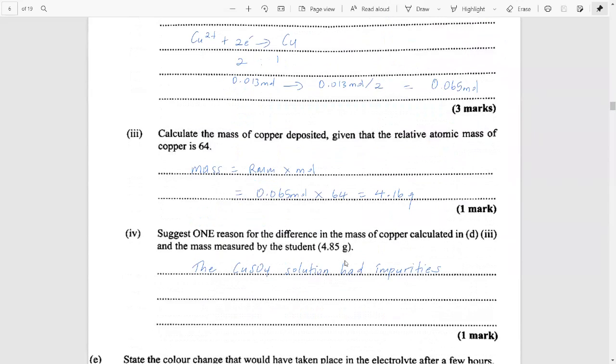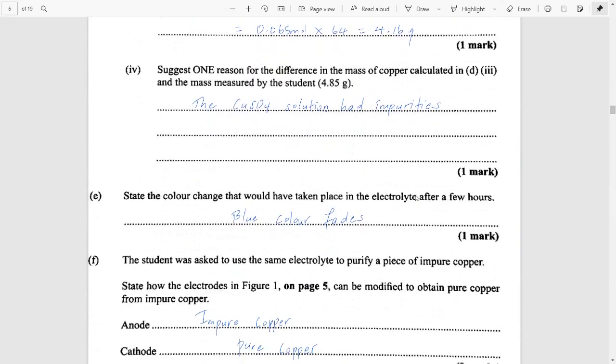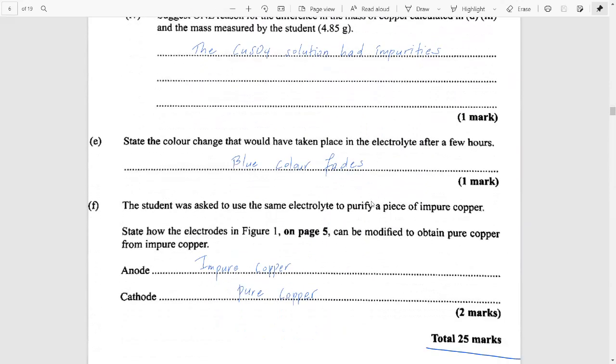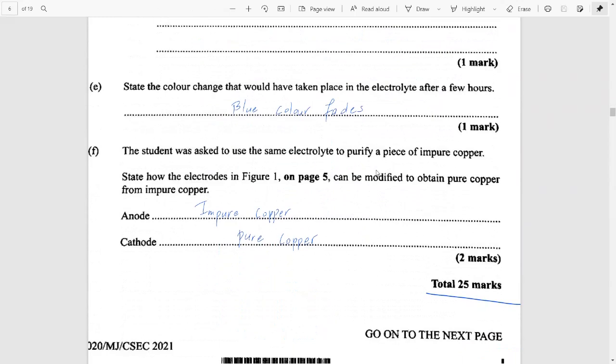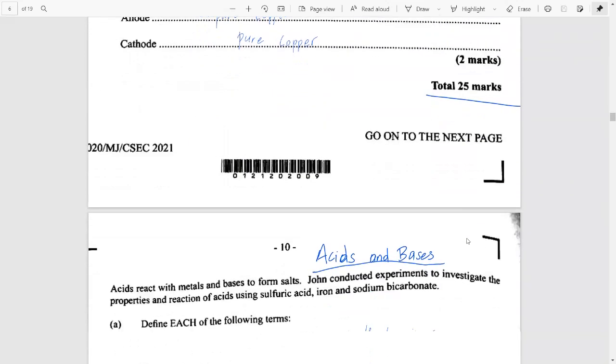Now, it's stated that you were expecting to form 4.85 grams of copper and you didn't. So it meant that the copper sulfate maybe had impurities in it. You'd expect the blue color to fade with time as you did this electrolysis process. And you were asked what you would have done if you wanted to purify copper. Of course, you had to make your anode impure copper and your cathode pure copper. This question was worth a whopping 25 marks.